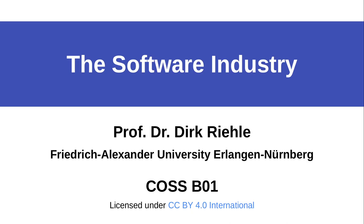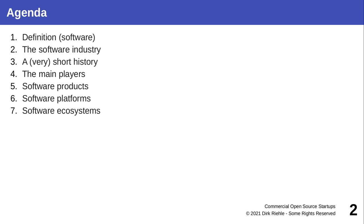Hello everyone and welcome to COS, our course on commercial open source software startups. This course has three main parts. The first is about the software industry, its players and its economics. The second part is about open source and in particular commercial open source strategies for software vendors. The third part is about how to spin off a commercial open source startup from your university. Each of these three main parts has four lectures, and this is the first lecture of the first part: a general introduction to what the software industry is and how it works. I will be talking about its history, the main players, and some economics that make the software industry tick.